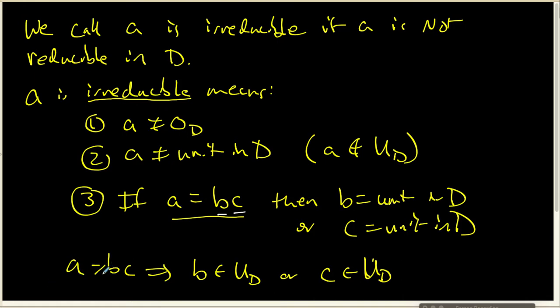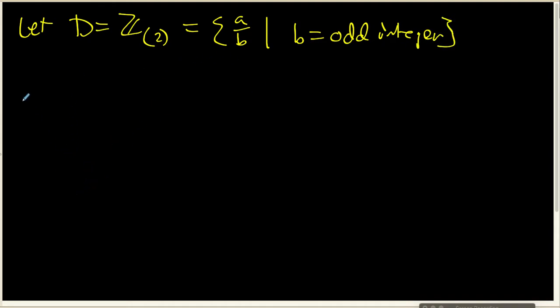Well, I do want to briefly look at a couple of examples inside of a not particularly comfortable ring for a lot of us. It always helps when you've got a new definition to look at a non-trivial example. So let's let our domain be the ring of integers localized at 2. Now, this is the set of fractions that look like a over b, where we know that b has to be an odd integer. And we've looked at this ring in a previous video.